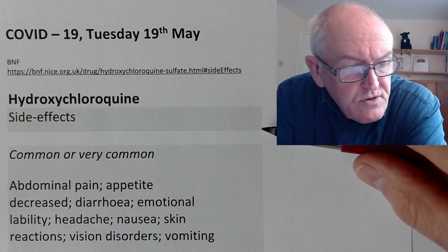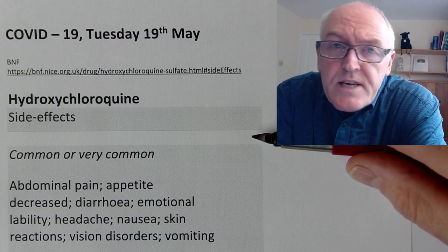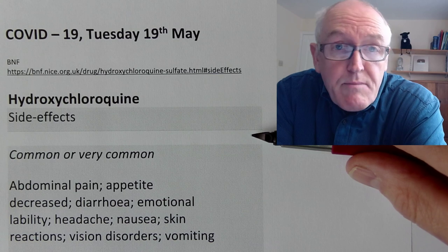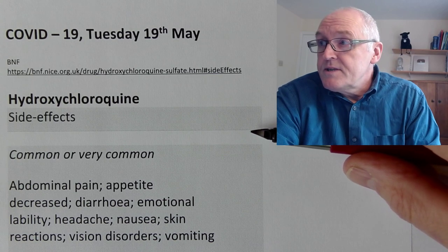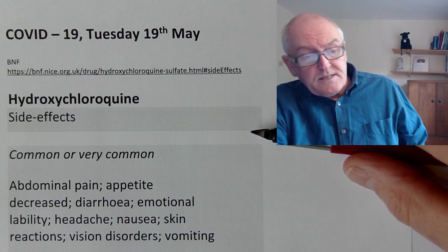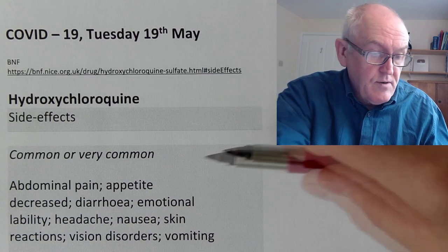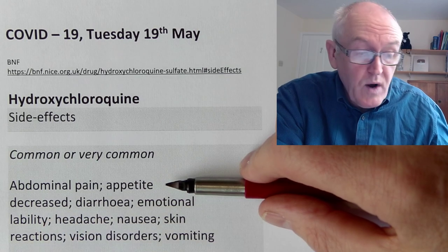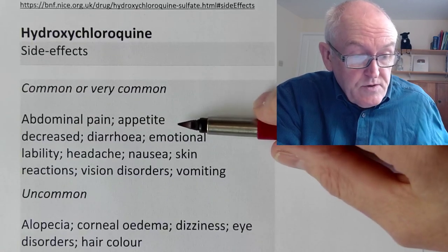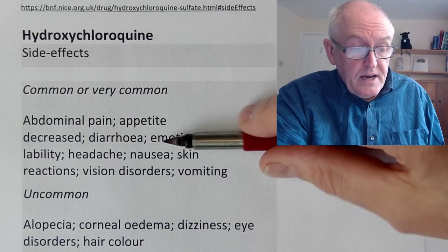Any drug that is going to have a pharmacological effect — any drug that's going to work — is going to have side effects as well, because it's a chemical substance being introduced into the body. The British National Formulary tells us about some of these side effects. Common or very common side effects include abdominal pain and reduced appetite — well, that's not a bad thing, you might lose a bit of weight. Diarrhea is a fairly unpleasant side effect.